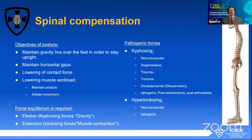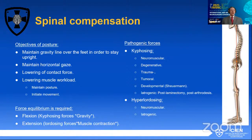As we saw previously from a biomechanical perspective, there are some objectives of posture: to maintain gravity lying over the feet in order to stay upright, the center of gravity over the base of sustentation; maintain horizontal gaze; lower the contact force, therefore lowering the forces that develop into degenerative spine disease and lowering muscle workload, which is probably one of the most important biomechanical objectives of posture.